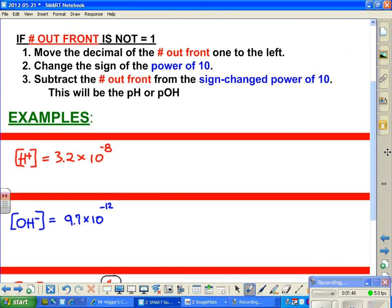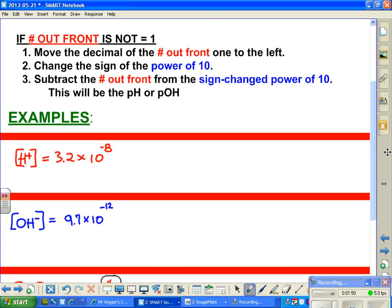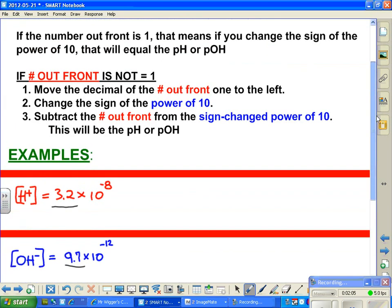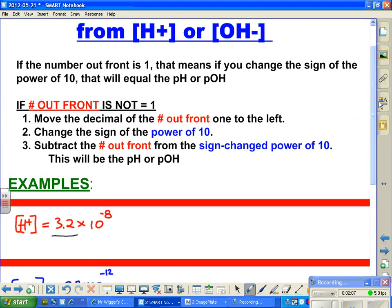So now let's check out this second part. If number out front is not 1, and the number out front is this guy, or this guy, or this guy. These are the numbers out front. That's what I'm referring to in this particular section right here. So move the decimal of the number out front, 1 to the left. Let's do it.